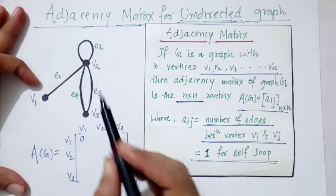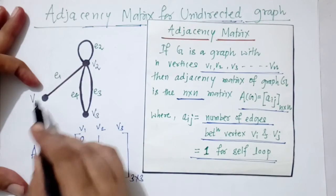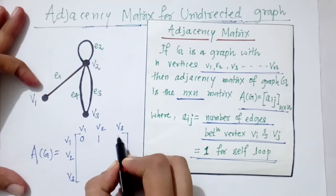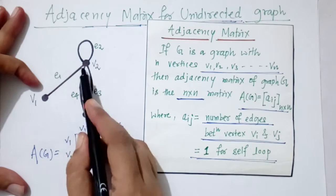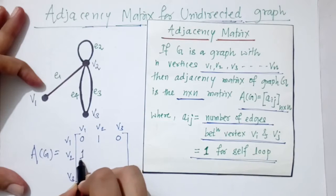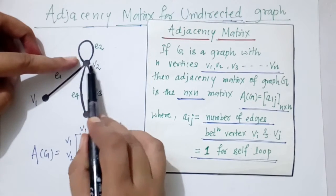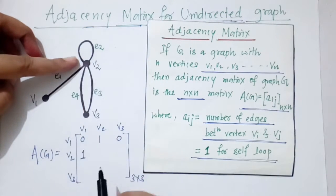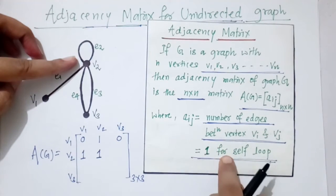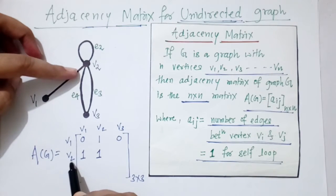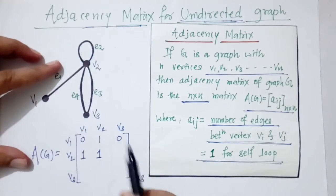The number of edges from vertex v1 to v2 is 1 edge. From v1 to v3, we move on. From v2 to v1, there is 1 edge, so we write 1. From v2 to v2, this is a self-loop, so aij equals 1 — we write 1. From v2 to v3, we can see there are 2 edges, so we write 2.